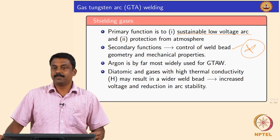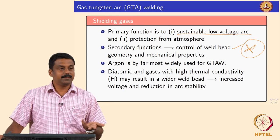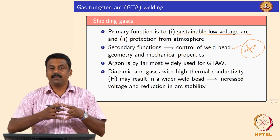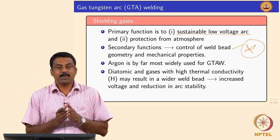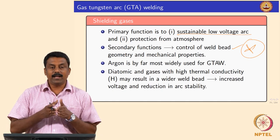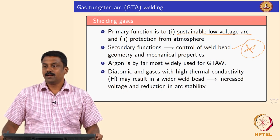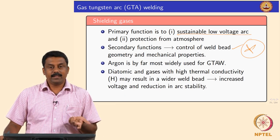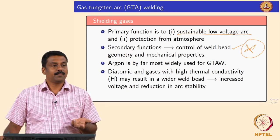You can also use high-conductivity gases such as hydrogen or helium to spread the weld pool. By spreading the heat, you can increase the area you weld and produce a wider bead geometry. So based on your need, by looking at the characteristics of the shielding gas, you can choose which shielding gas to use for welding.